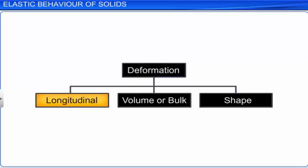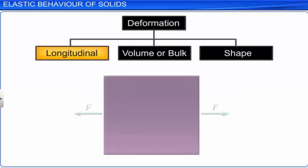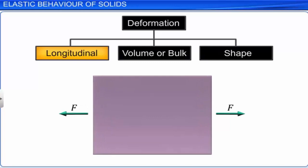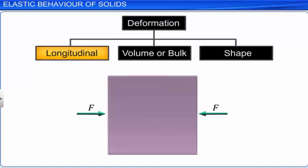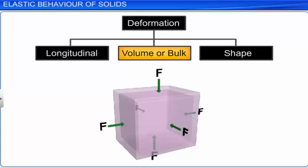If two equal and opposite forces are applied perpendicularly to opposite faces of a body, the length of the body along the line of action of the forces changes. The length will increase for outward forces and decrease for inward or compressive forces. If forces are uniformly applied in all directions on a body, the dimensions of the body undergo an overall change, leading to an increase or decrease in the volume of the body without altering its shape. If two equal and opposite forces act parallel to two opposite faces of a body in a tangential direction to the surfaces, the shape of the body gets distorted.